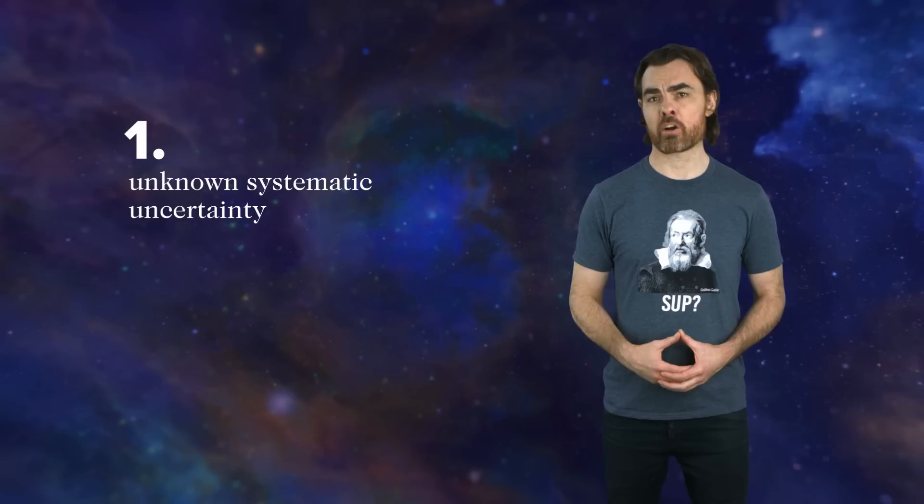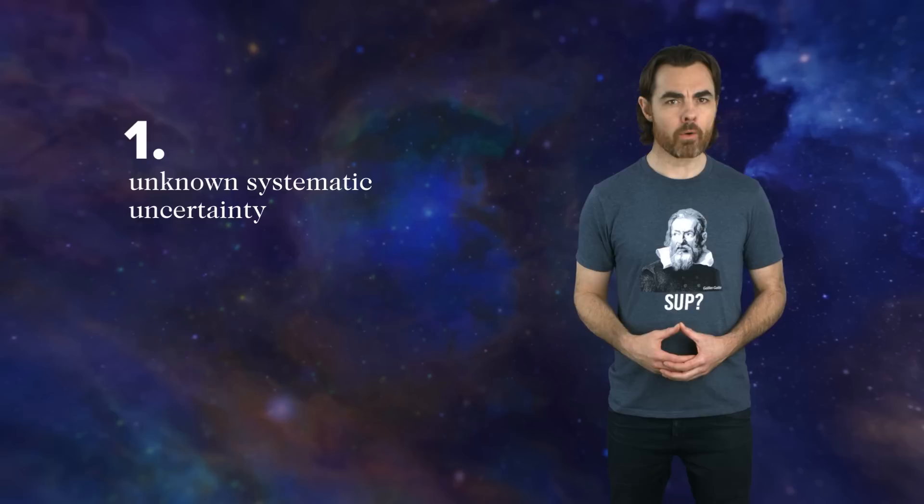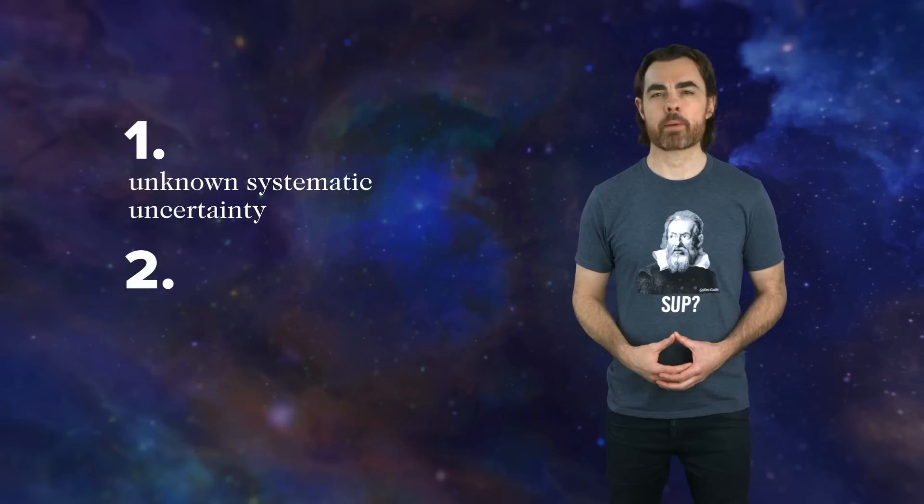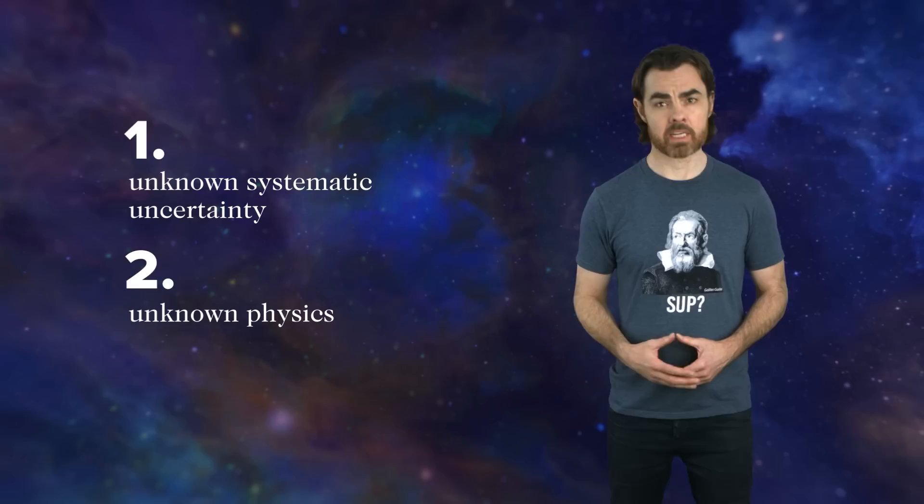or perhaps gravitational lensing alters the Planck speckles differently to how we thought. Ongoing efforts are ruling out systematic errors one by one, but it's possible there's still something we haven't thought of yet. Second, there's some unknown physics that needs to be taken into account for the CMB calculation. This is the most exciting possibility.